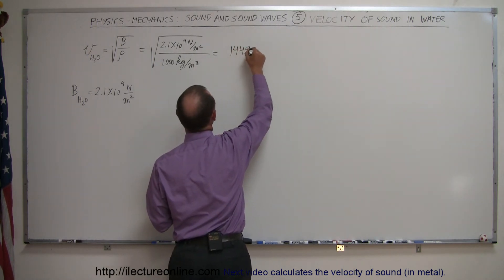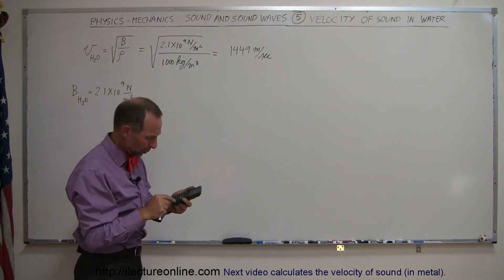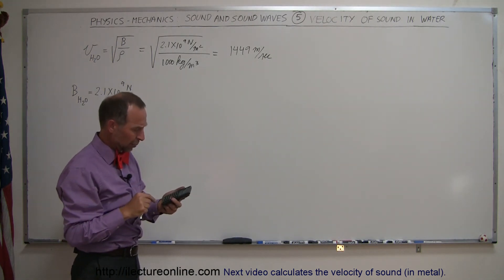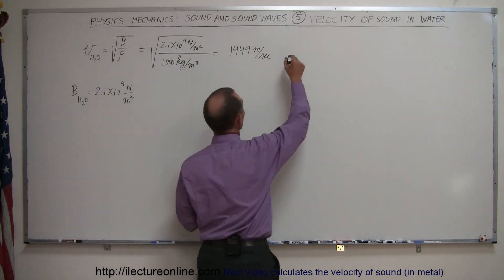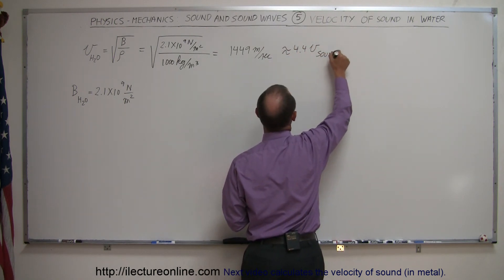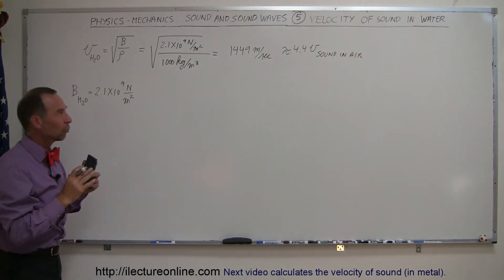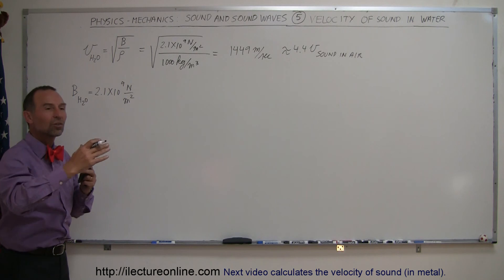1449 meters per second. If we divide that by 331, we get 4.4, so it's approximately 4.4 times the velocity of sound in air because it's so much more difficult to compress water.